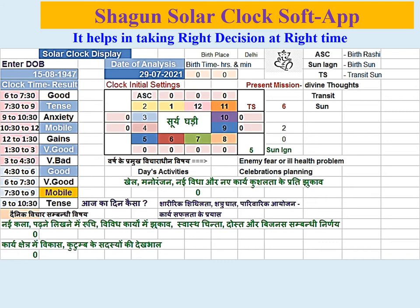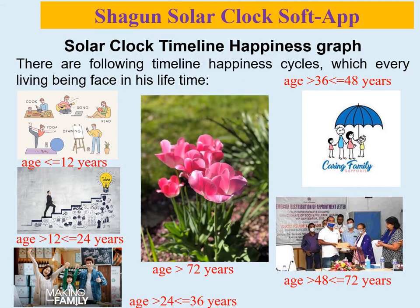This is a decision-making tool that the government can use to make the right decision. The solar clock is used to take the right decision at the right time. This is a private solar clock display dated 15th August 2021. The timeline is a continuous graph.